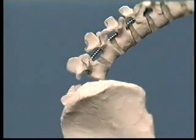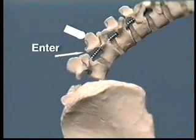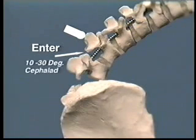When doing an LP, palpate the end of the spinous process and enter there. This entrance gives the greatest accessibility to the cistern. Aim 10 to 30 degrees cephalad. As shown here, you could almost go perpendicular.